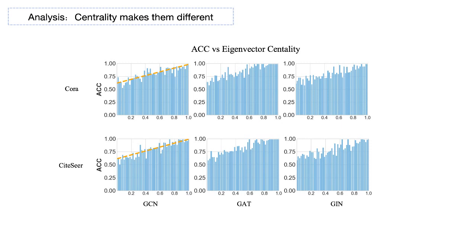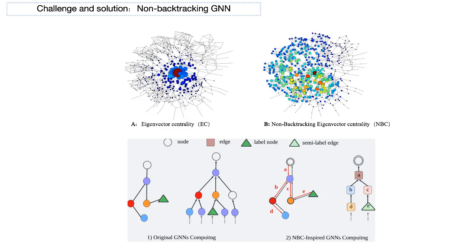These slides present a case study of this correlation in commonly used datasets. Unfortunately, the distribution of eigenvector centrality is highly imbalanced. The centrality scores are concentrated on a small number of nodes,